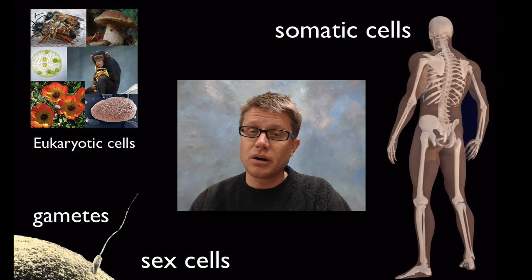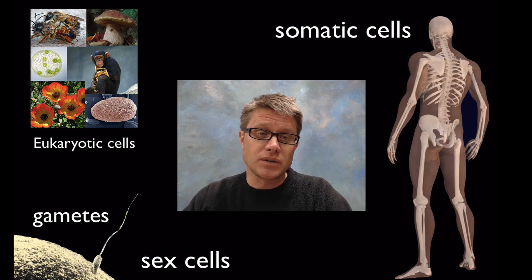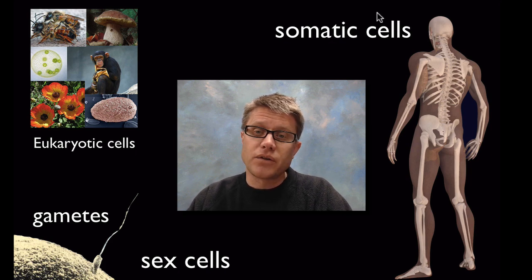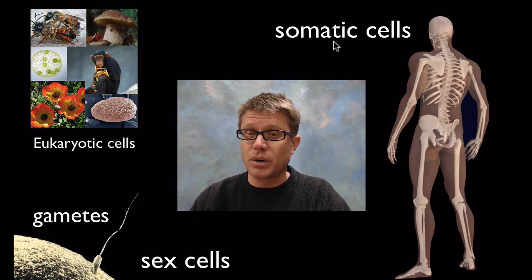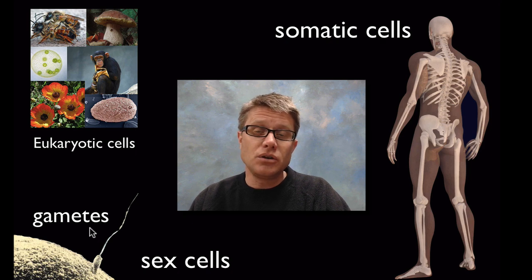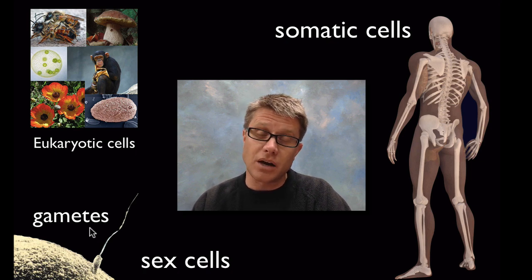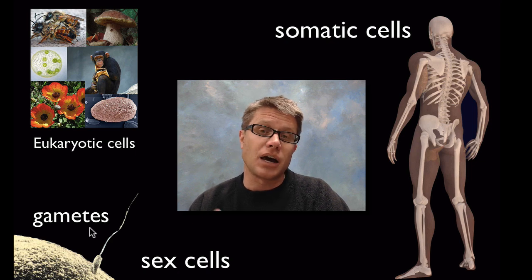We don't go through binary fission because we're eukaryotic cells. Before talking about mitosis and meiosis, we should understand the difference between a gamete and a somatic cell. Eukaryotic cells are found in everything from chimpanzees to bees to flowers to mushrooms — they all have a nucleus. Somatic cells are the body cells, while gametes are the sex cells. In humans, gametes are sperm in males and eggs or ova in females. Somatic cells are diploid — they have two copies of every chromosome — while gametes have only one copy.